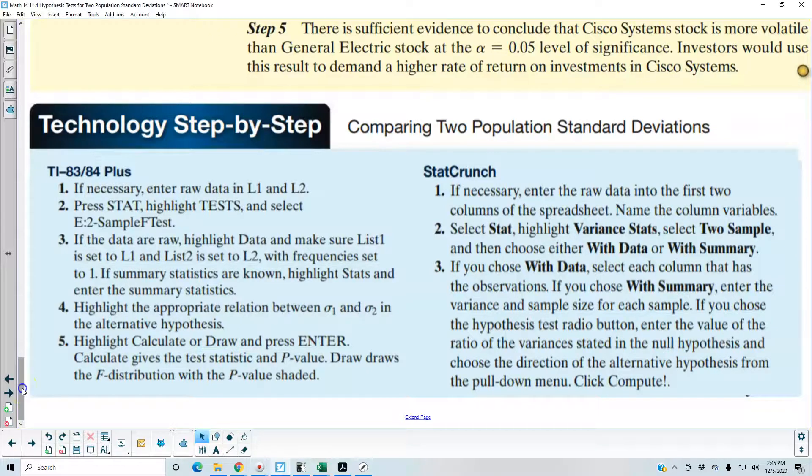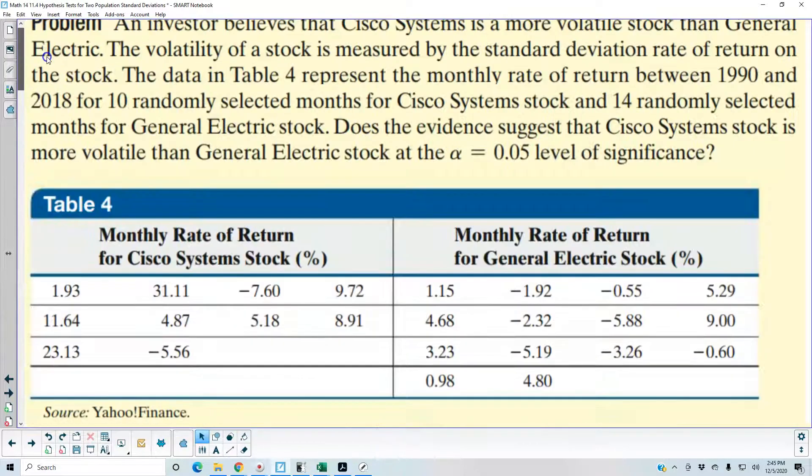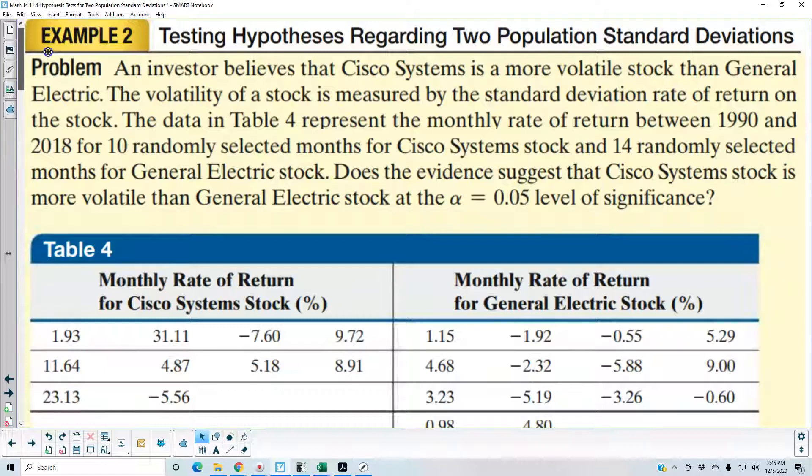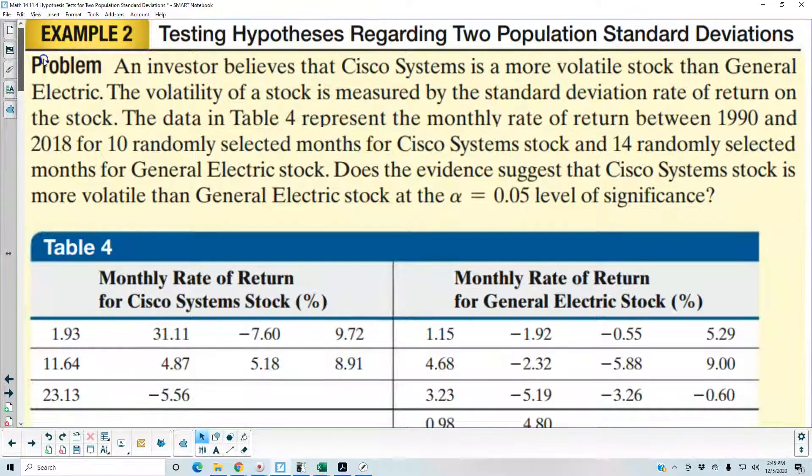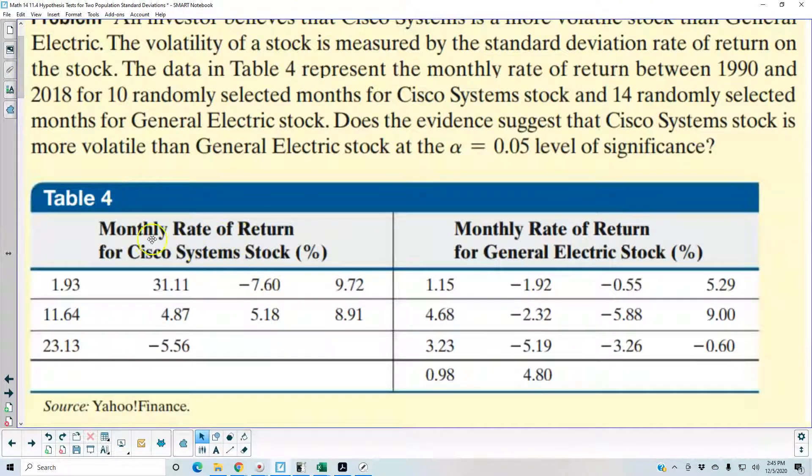Using StatCrunch for example number two, testing hypothesis regarding two population standard deviations. In this example, we have Cisco Systems stock which has 10 data values and General Electric stock which has 14 data values.